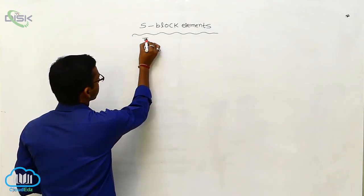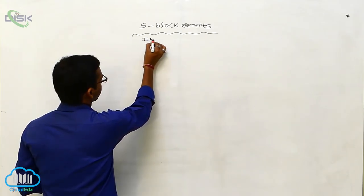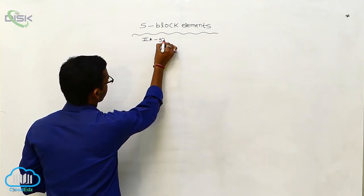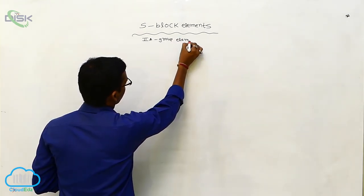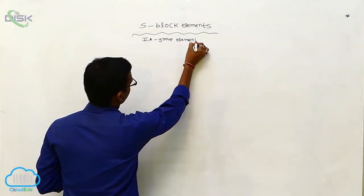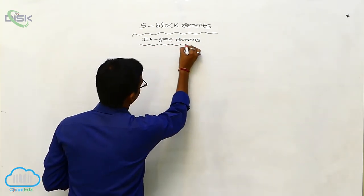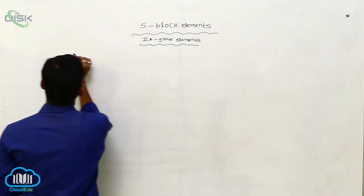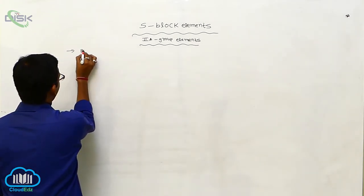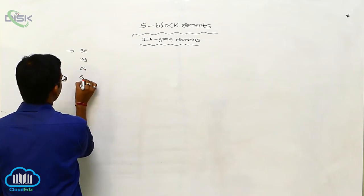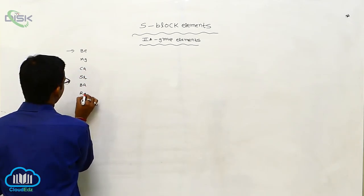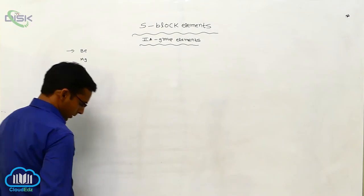Secondary group elements. The secondary group elements are beryllium, magnesium, calcium, strontium, barium and radium.